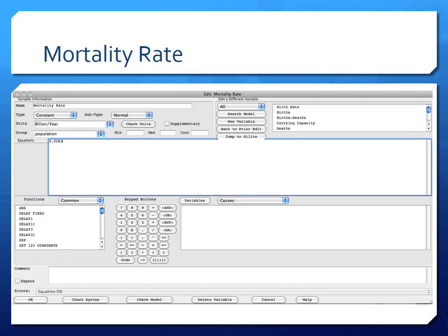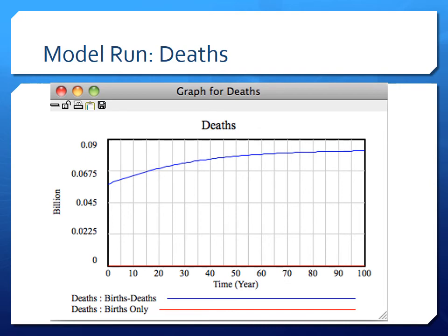The mortality rate, taking the last few years of data, is about 8.3 deaths per thousand people, which translates to 0.0083 per year in the model. We can now rerun the model. We have two runs: the red model has births only with zero deaths. Looking at deaths in the new model, they start at about 56 to 57 million people per year — matching current real-world data — and increase over time as population grows before eventually tapering off.